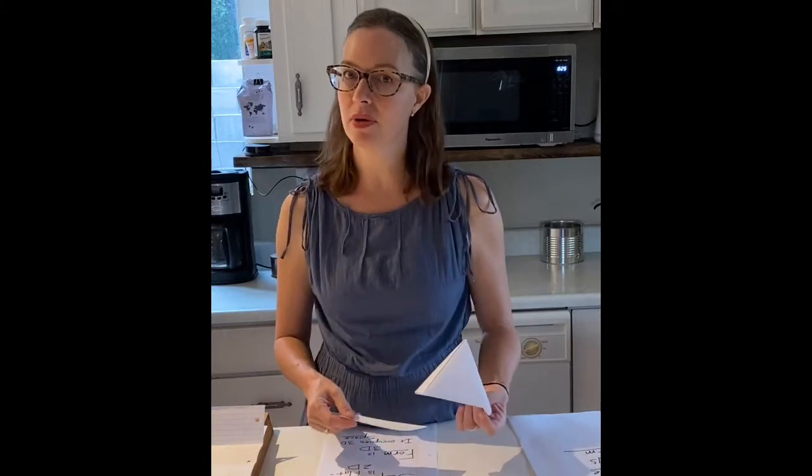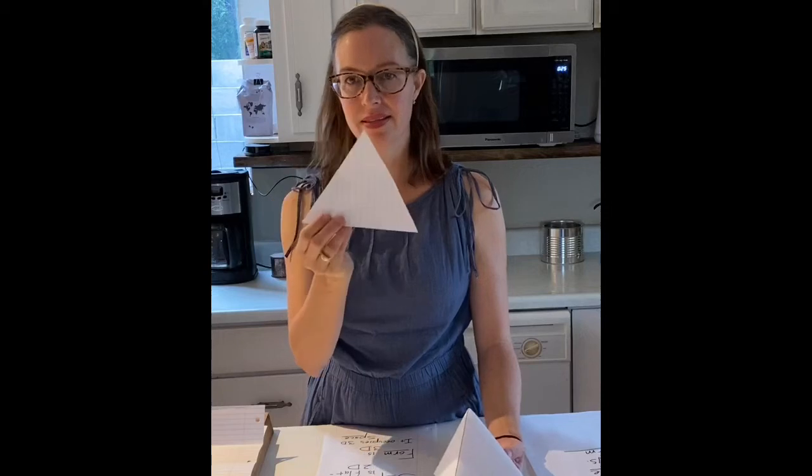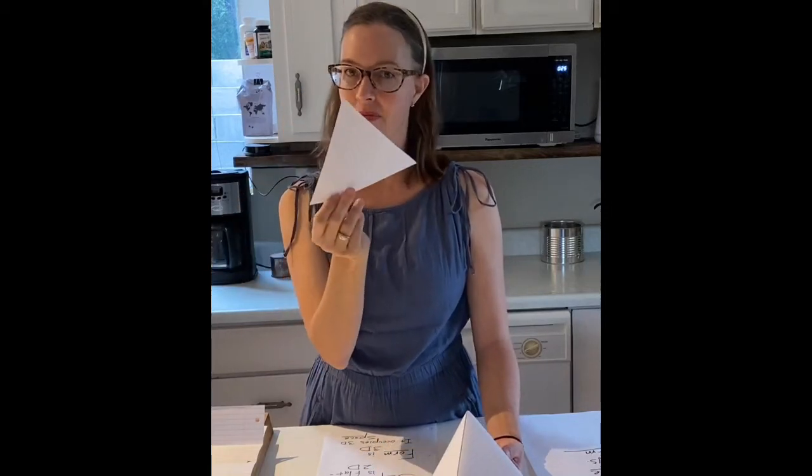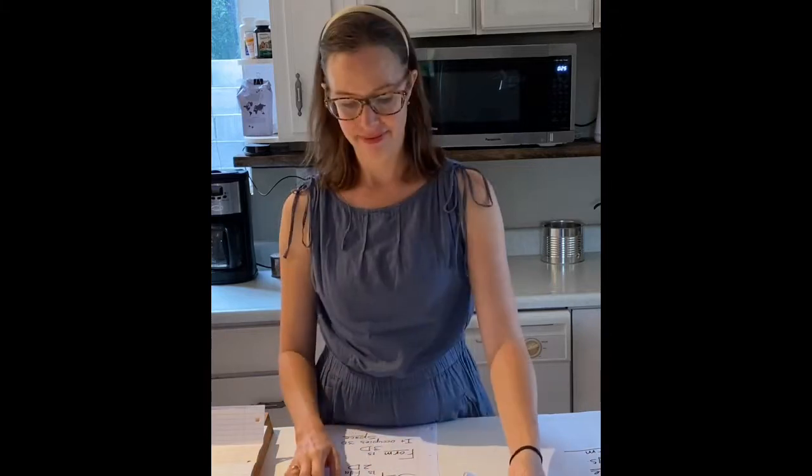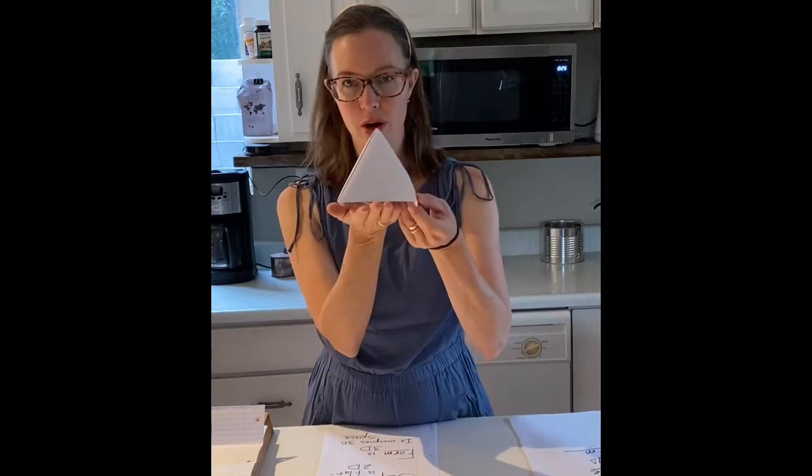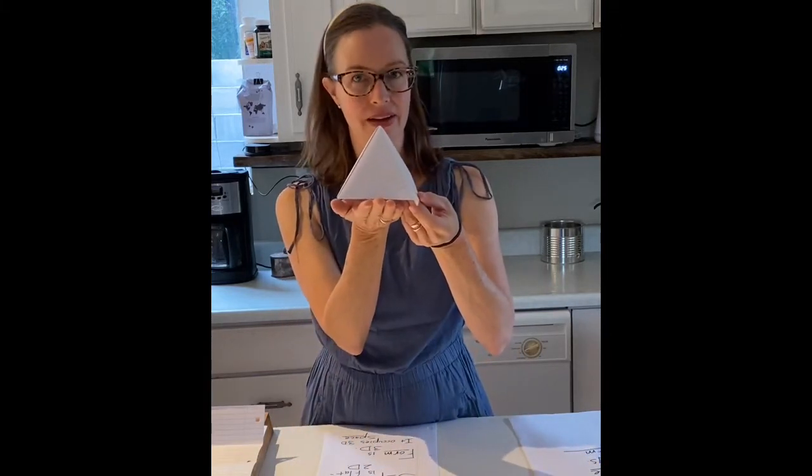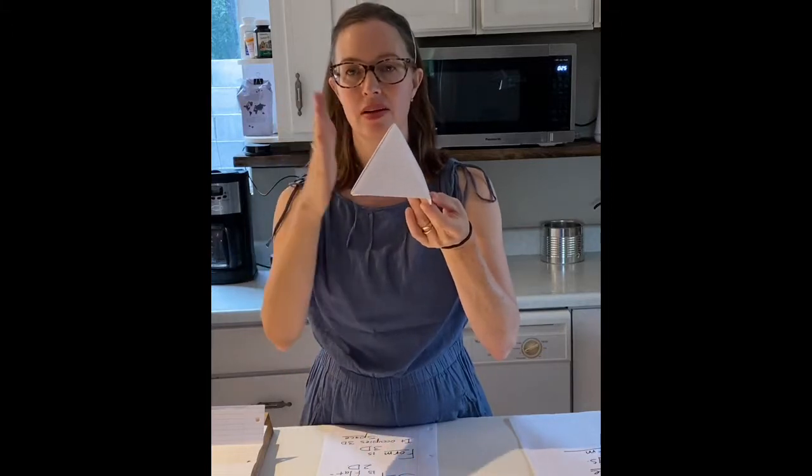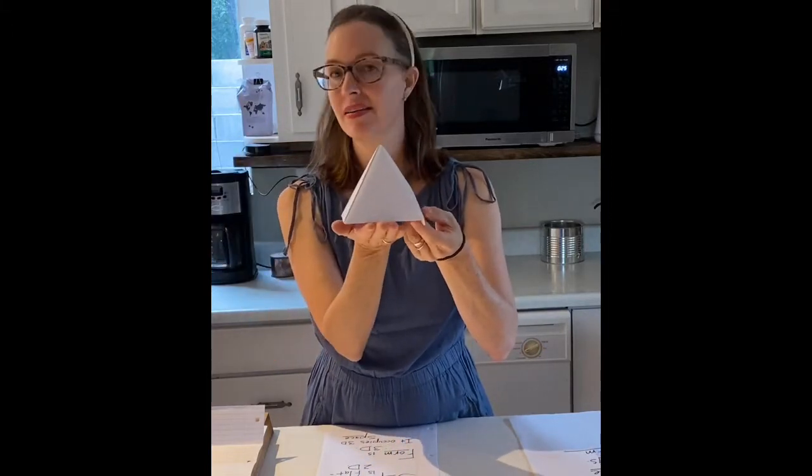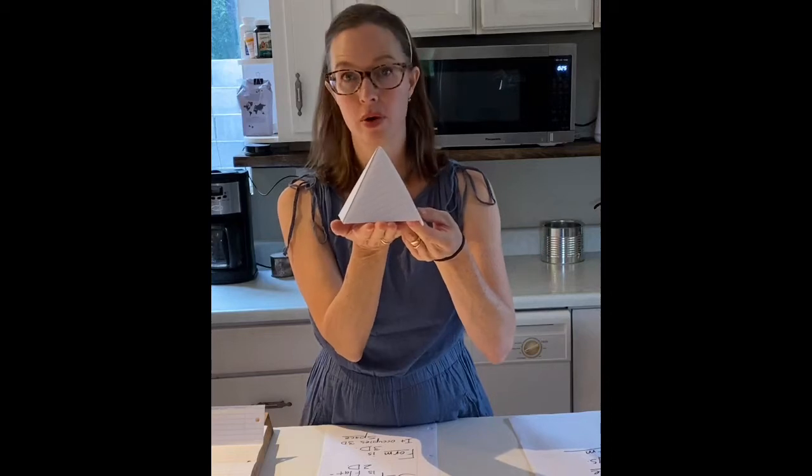Even I find myself using the wrong terminology because this is considered a shape. It's flat. It's the shape of a triangle. This is the form of a pyramid. It's not a triangle. It has height, width, and depth, so it's not called a shape. It's called a form.